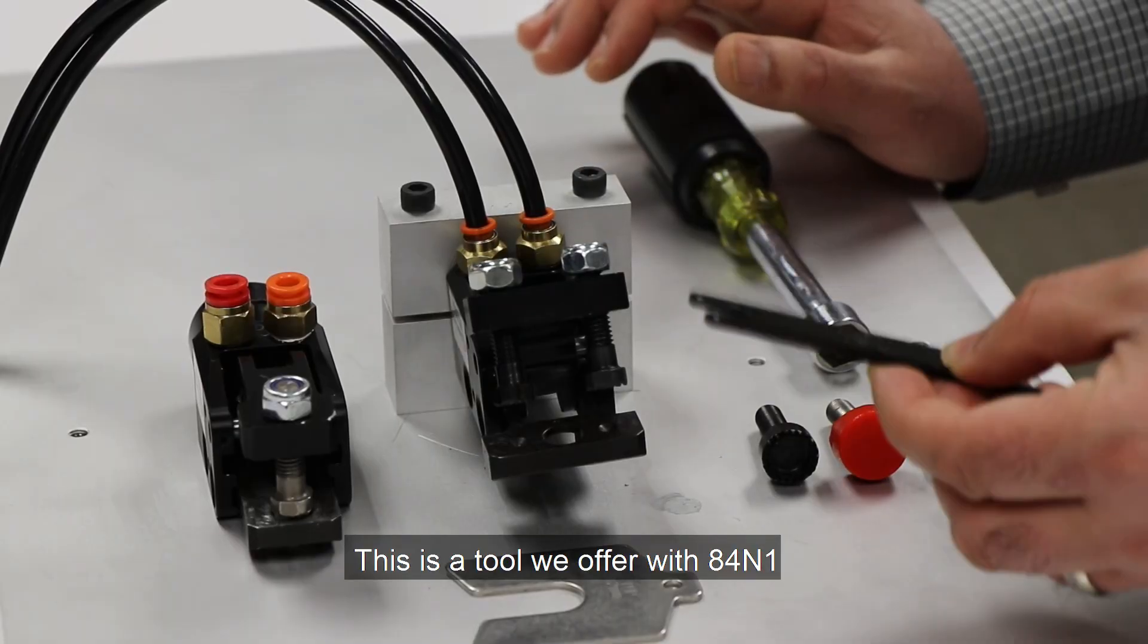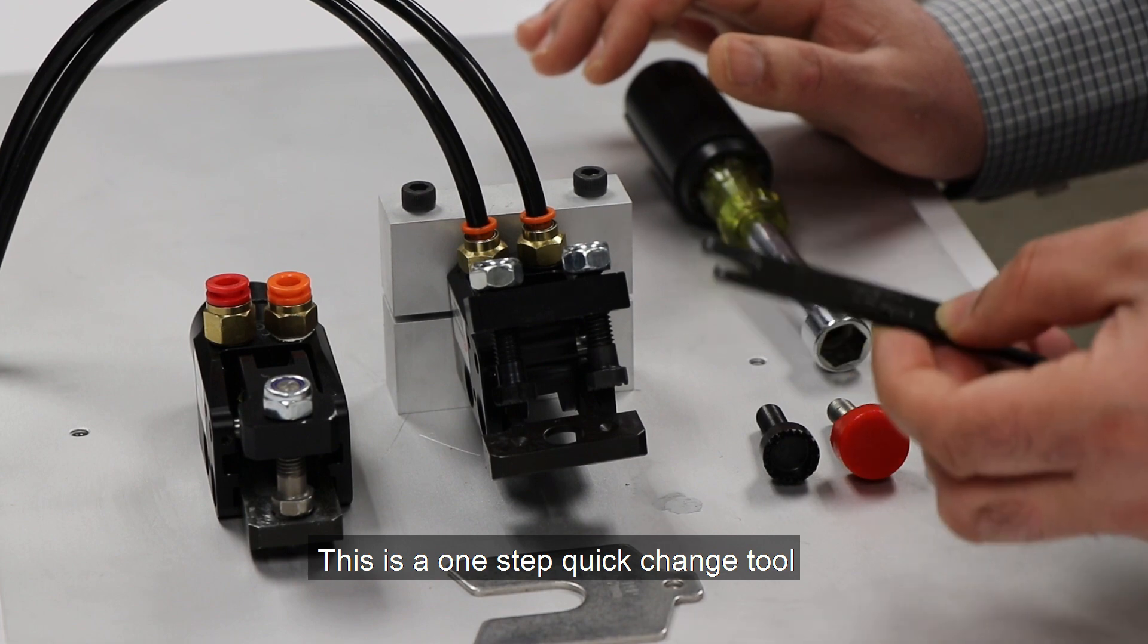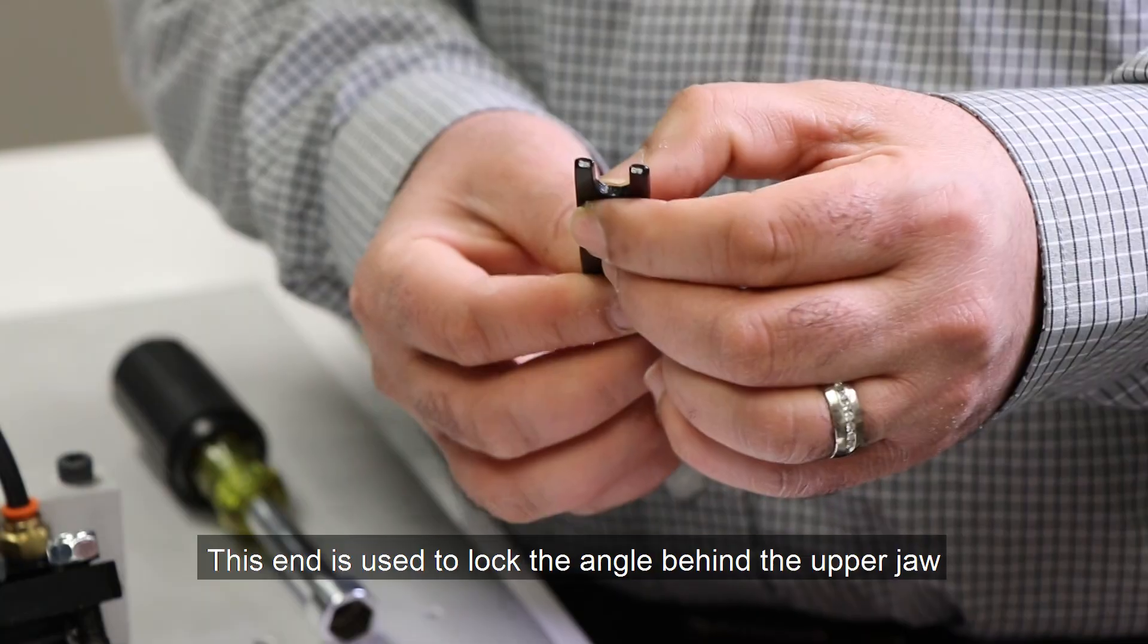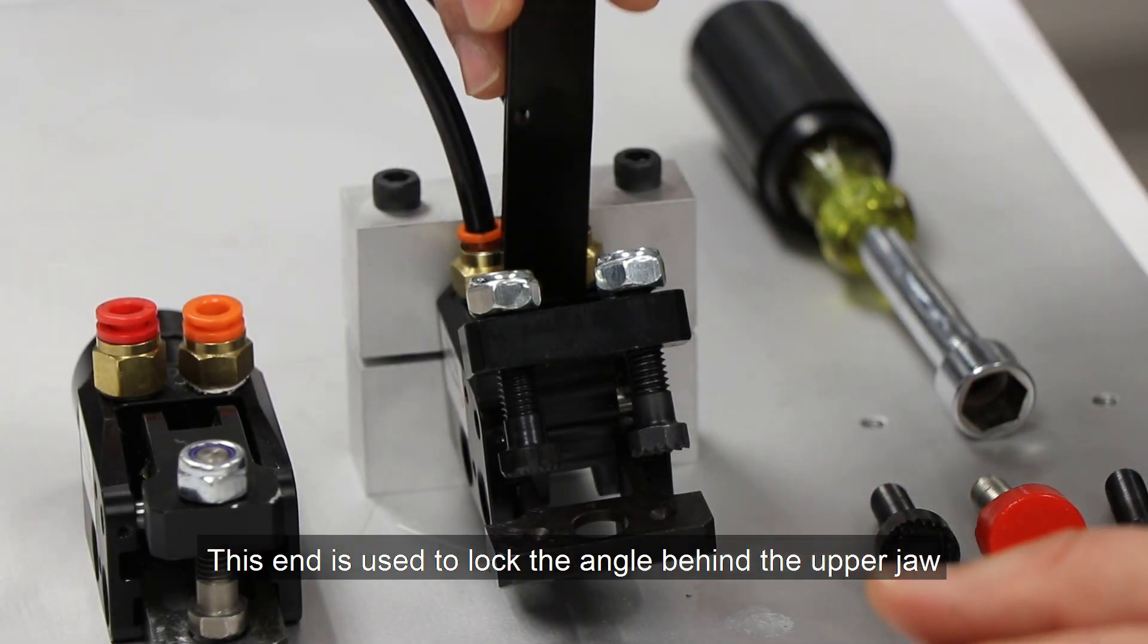This is a tool we offer with the 84N1. This is a one-step quick change tool. This end is used to lock the angle behind the upper jaw.